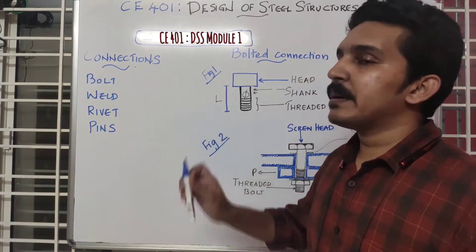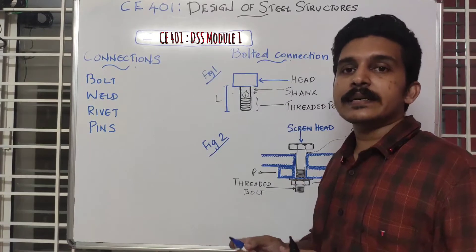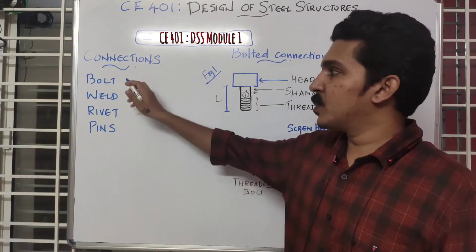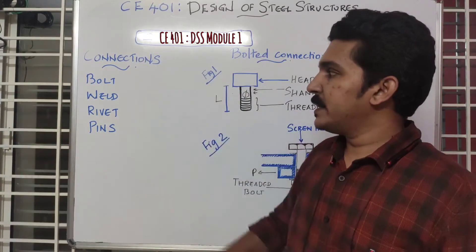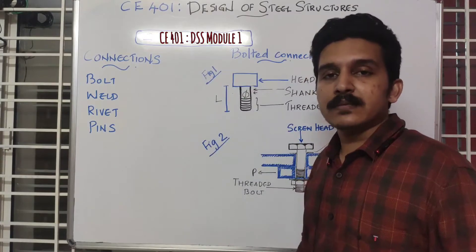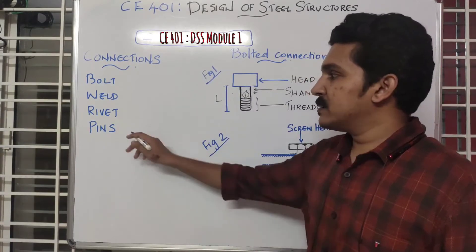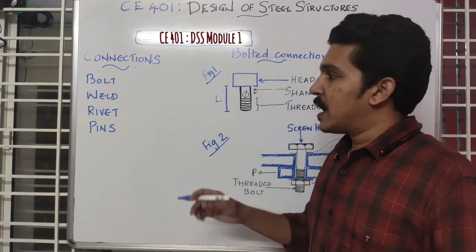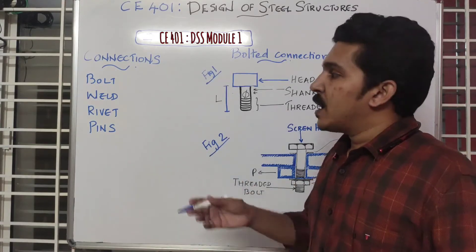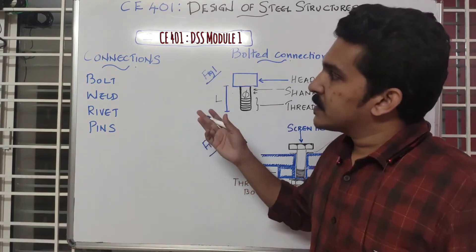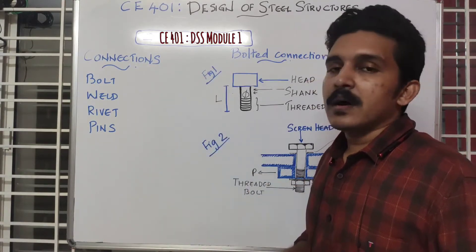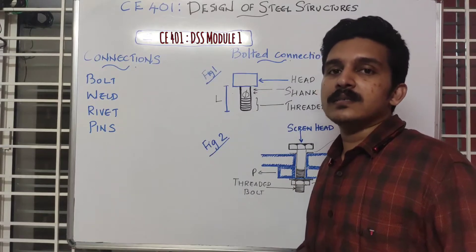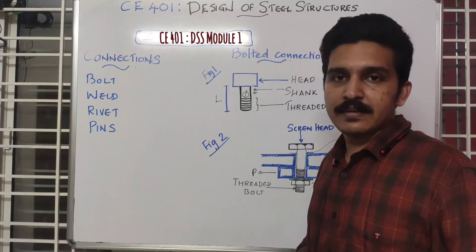Steel members like beams and columns are connected together by any of these connections like bolt, weld, rivet, or even pins. Pins are only used in mechanical structures or machines. Otherwise, bolt, weld, or rivets are commonly practiced in all steel-related structures like buildings.